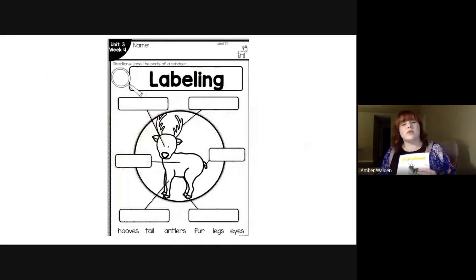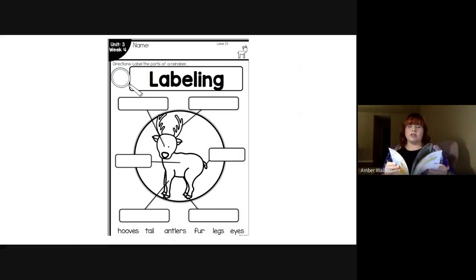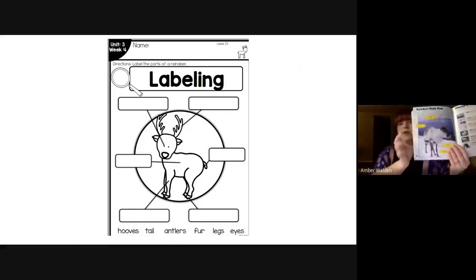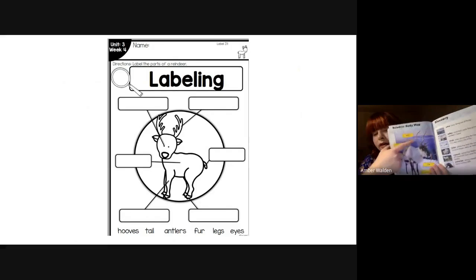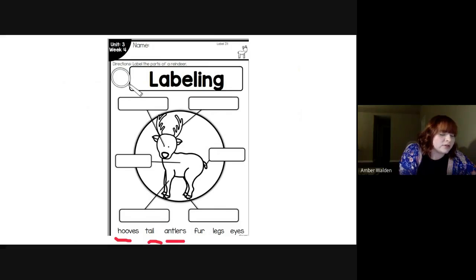So what you're going to do is you're going to practice making your own nonfiction text feature. So you're going to be making a diagram of a reindeer. So we have some words at the bottom and I'll tell you what those words are. And I'll look back at this one and remind you what those special parts of a reindeer are called. So we have the fur, the antlers, the nose, and the hooves. So this first word here says hooves. So you're going to write that word where the hooves are. This word says tail. So you're going to write tail where the tail is. This word says antlers. So you're going to write antlers where the word says antlers. This word says fur. So you're going to write fur in the box that is pointing to the reindeer's fur.